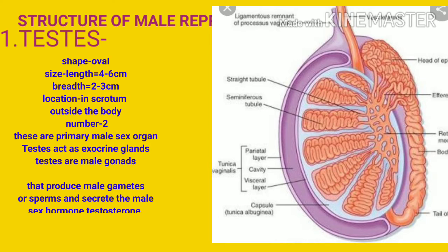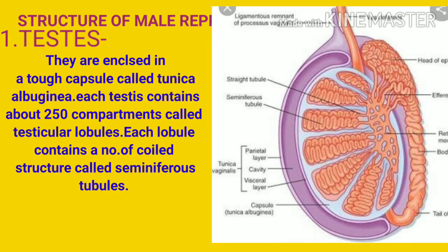Testes act as an endocrine gland because they secrete the hormone testosterone. Testes are male gonads that produce the male gametes called sperms and secrete the male sex hormone testosterone. Testes are enclosed in a tough capsule called tunica albuginea. Each testis contains about 250 compartments called testicular lobules.